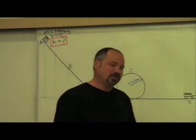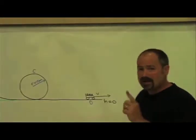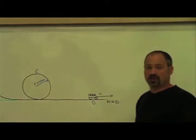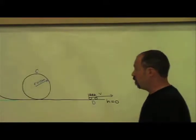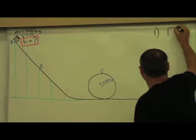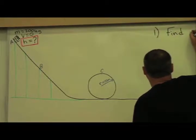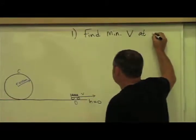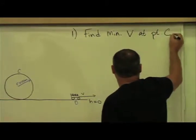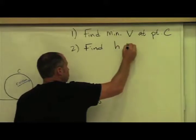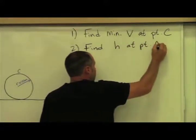This is a two-step problem. The first step is: what is the minimum speed necessary at point C? And once we know that, we can use energy conservation to solve for the minimum height necessary in order to have that speed at point C. So, step one is find minimum speed at point C, and then step two is find H at point A.